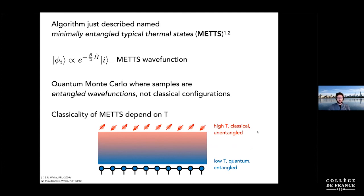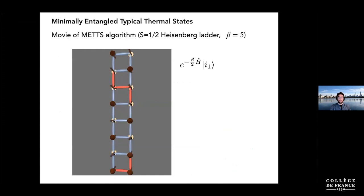At high temperature, sampling looks like classical Monte Carlo again; at low temperature it looks like computing the ground state over and over; at moderate temperature, something in between. I'll end by showing a movie that Steve White made — a spin-1/2 Heisenberg ladder as a toy example — showing one of these states at a time and their properties. The arrows show the instantaneous spin orientation; the bond colors show the S-dot-S Heisenberg interaction: blue means happy or anti-ferromagnetic, red means unhappy or ferromagnetic. These are actual quantum states you can store in the computer, and averaging over them rigorously gives correct thermal averages.